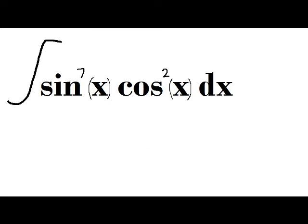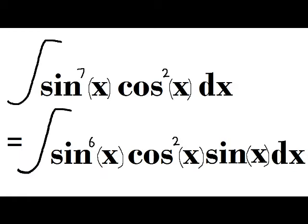I could have sine to the seventh power, x, cosine to the second power, x, and it will become sine to the sixth power, x, cosine to the second power, x, and then sine x, dx at the end.